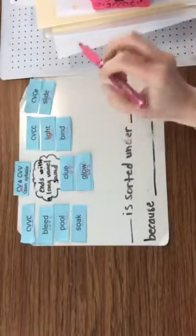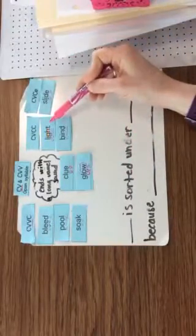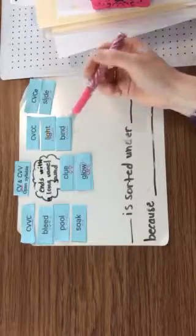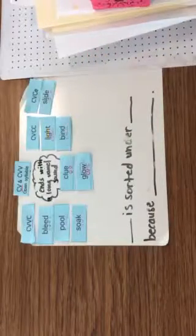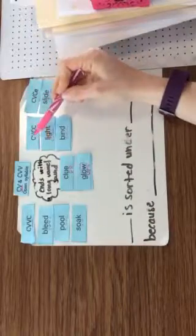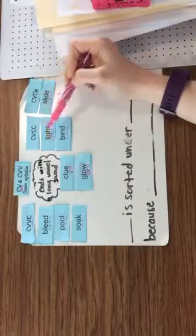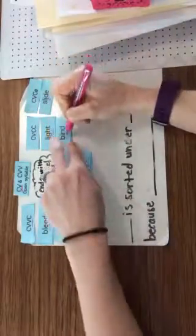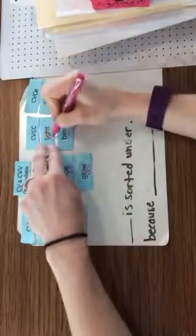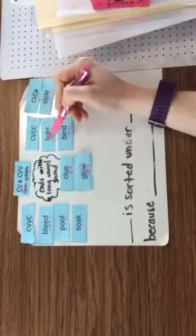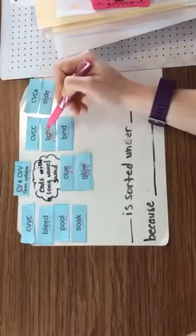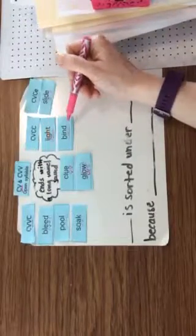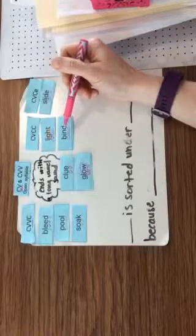We also have the word light and bind, which both make the long I sound, and it follows the pattern consonant vowel, consonant, consonant, because it's just one vowel in the word surrounded by consonants. In the word light, the I-G-H is actually making the I sound, and in the word bind, the I is making the I sound.